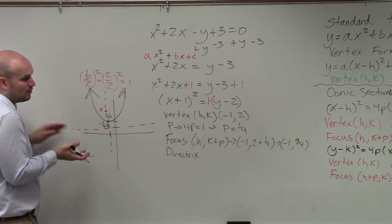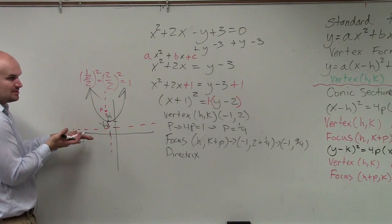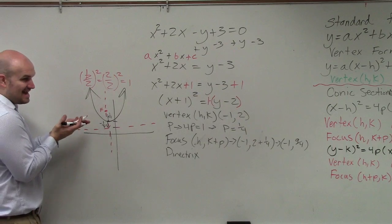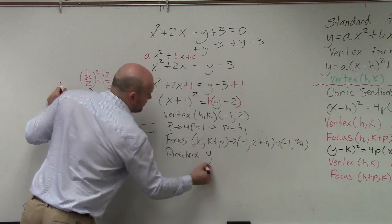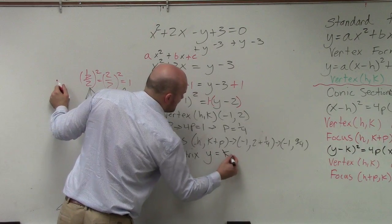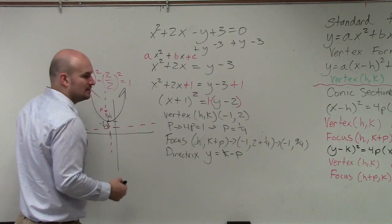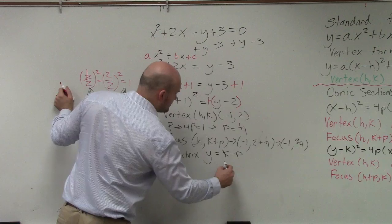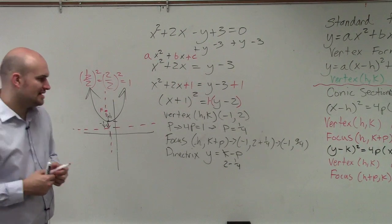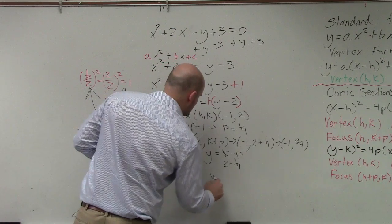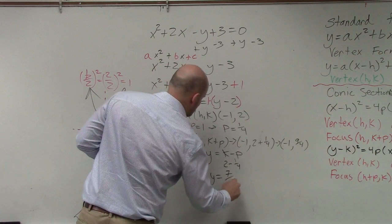a horizontal line representing a horizontal line should be x equals or y equals? Y equals. Because the y value is going to be where that at. So therefore, that's going to be y equals k minus p. So k, again, is 2 minus 1 fourth. So that's going to be y equals 7 fourths.